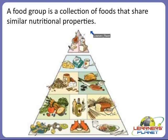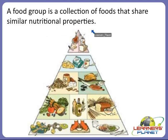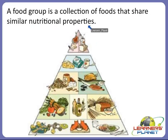A food group is a collection of foods that share similar nutritional properties. What is meant by nutritional properties? The food which provides nutrition for our body so that it can get energy and perform every type of work. Group means a collection of many types and variety of foods, because we eat a variety of foods. So a food group is a collection of foods that share similar nutritional properties.